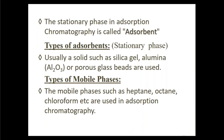In adsorption chromatography, the stationary phase is called an adsorbent. Typical adsorbents are solids such as silica gel, alumina, or porous glass beads. Types of mobile phases used include heptane, octane, and chloroform. Since the adsorbents used are all polar, more non-polar mobile phases are needed to elute the retained solutes.